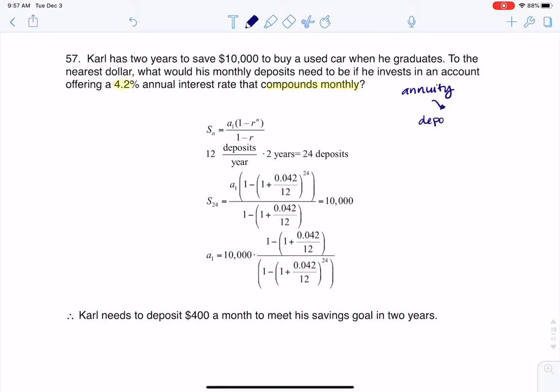When I say annuity, we're depositing a fixed amount regularly, periodically, monthly. Imagine that you wanted to have $10,000 in a couple of years, how much money would you need to deposit per month to make that happen? It says here two years. If you're going to make deposits 12 times a year for two years, you're going to be making 24 deposits.